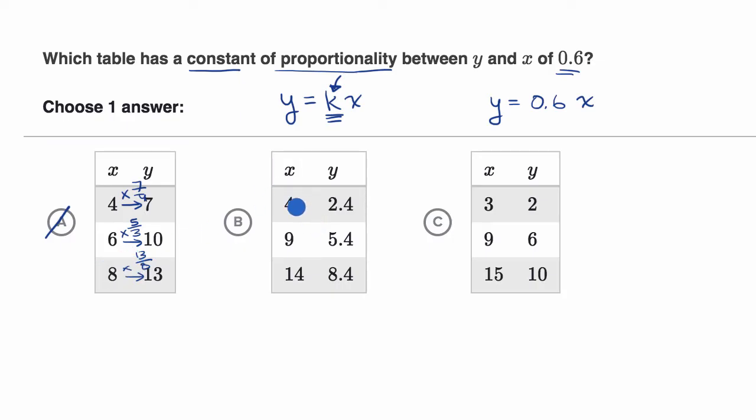Now let's look at choice B. To go from four to 2.4, you would multiply by 0.6. But that's not enough for us to say that this is truly a proportional relationship. It would have to be 0.6 in every scenario.